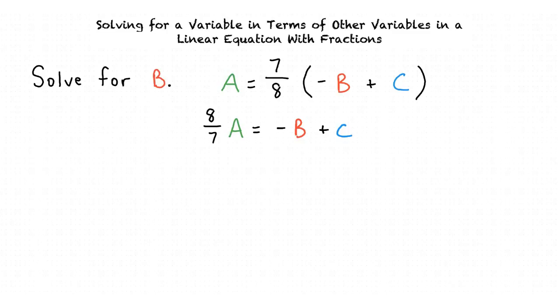Our next step now is to subtract c from both sides of the equation. The result after subtracting c is 8 sevenths a minus c equals negative b.